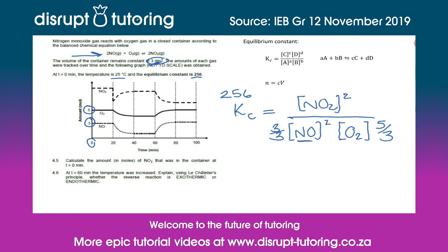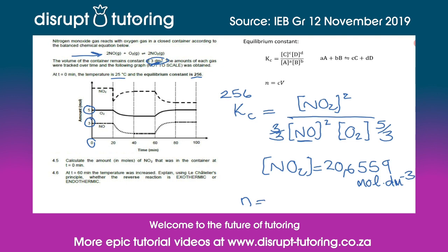Solving for the concentration of nitrogen dioxide gives us 20.6559 mol·dm⁻³. Plugging this into n = c × v, we have 20.6559 multiplied by 3 dm³, which gives us the number of moles of nitrogen dioxide present at t equal to zero as 61.97 moles.